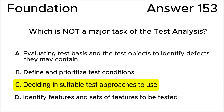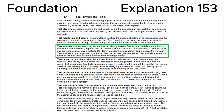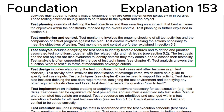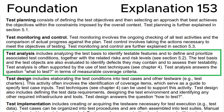My recommendation: please figure out all the test activities with examples in the ISTQB syllabus. Let's look at section 1.4.1 — Test Activities and Tasks — where we can see that test analysis includes analyzing the test basis to identify testable features and to define and prioritize associated test conditions together with the related risks and risk levels. The test basis and test objects are also evaluated to identify defects they may contain and to assess their testability.